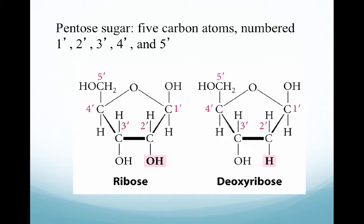Let's examine the sugar associated with DNA. The sugar comes in a deoxyribose form for DNA and a ribose form for RNA. The sugar is a pentose sugar, meaning it has five carbon atoms numbered from the one-prime carbon working clockwise to carbon number five. The key difference between the two sugars is at the two-prime carbon: deoxyribose is missing an OH group off the two-prime carbon, whereas ribose has the OH group.